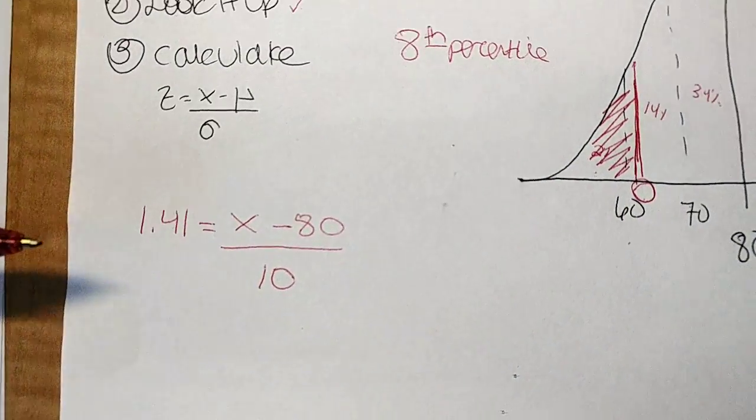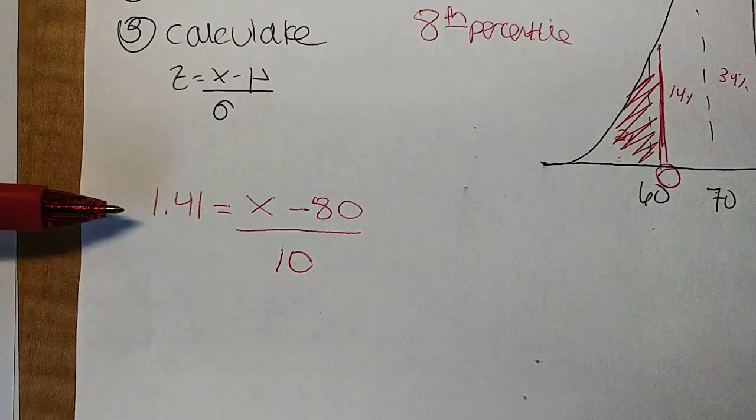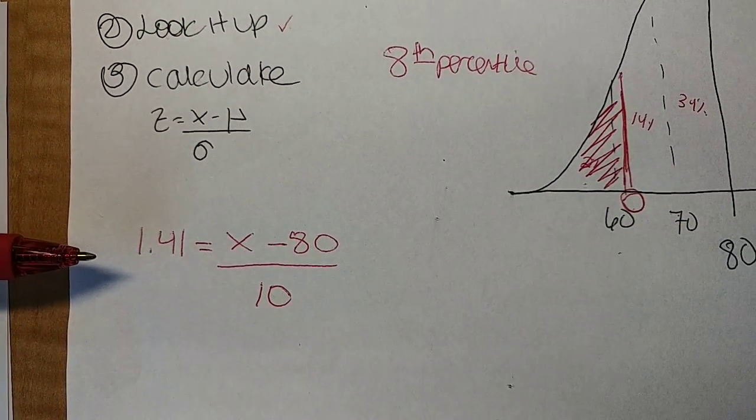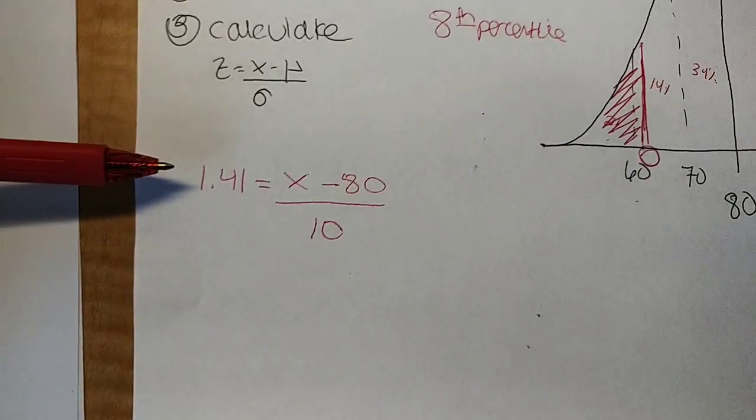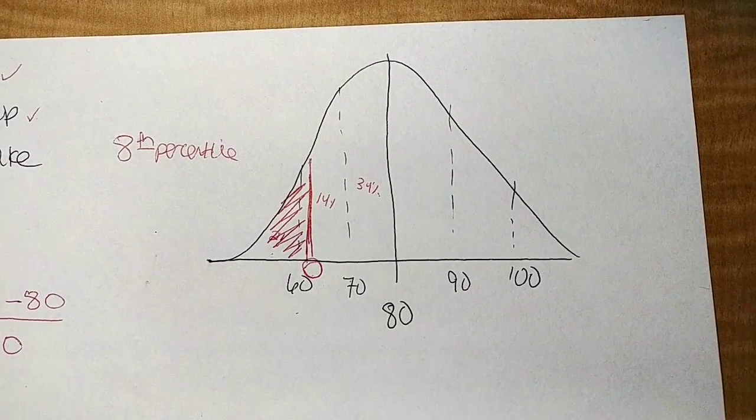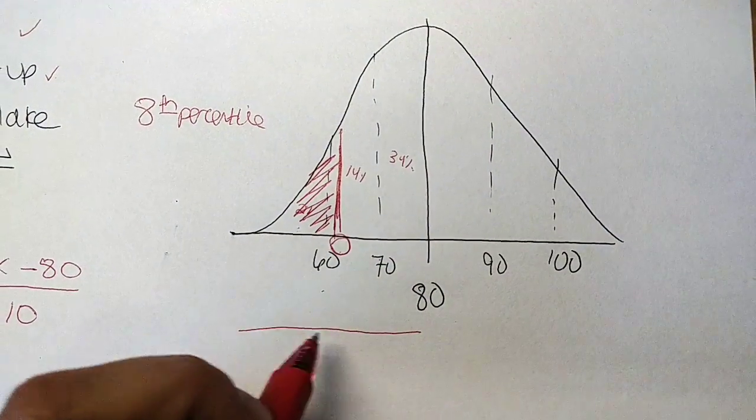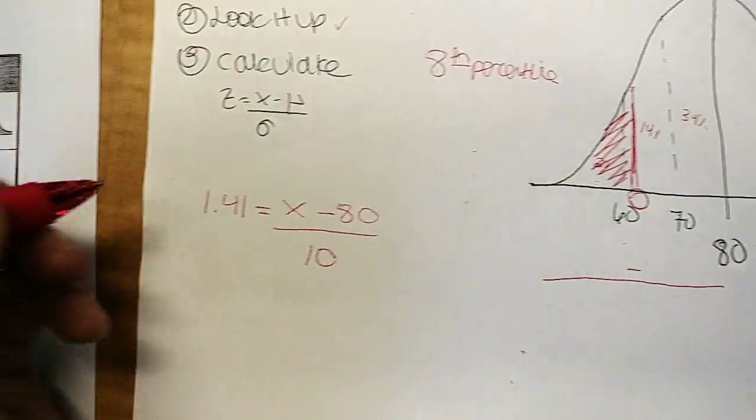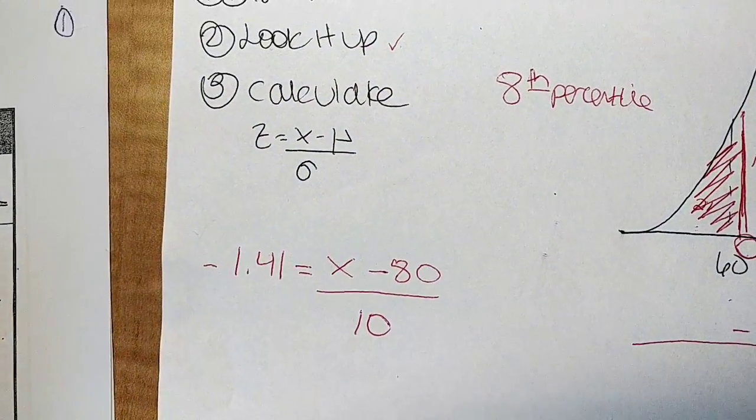Now, I want to take stock. I know that the score is 1.41 for an 8% in the C column, but there's one thing I left out that's really critical. When I'm looking at my distribution, remember the Z scores on this side are going to be negative, and the Z scores on this side are going to be positive. So actually, this is a negative 1.41.